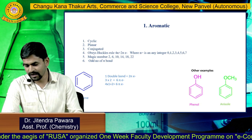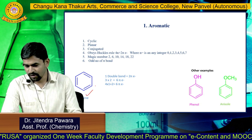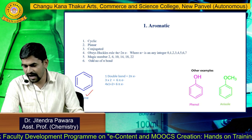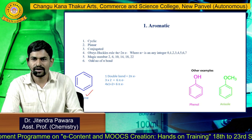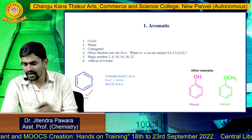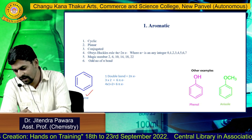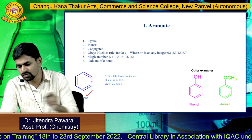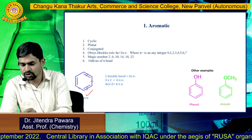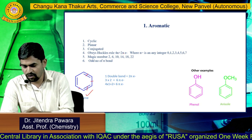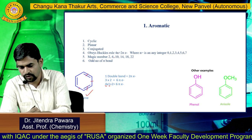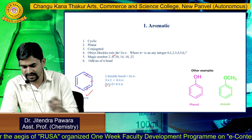Let us take the example of an aromatic compound. Benzene is an aromatic compound because it is cyclic, it is planar — all the carbons of benzene are sp2 hybridized, and sp2 hybridized carbons are planar in nature. So benzene is cyclic, planar, and conjugated. Conjugated means it should have alternating double bonds and single bonds. Benzene has double bond, single bond, double bond, single bond — this is called conjugation. And it obeys Huckel's rule: for n equal to one, four into one plus two gives a total of six pi electrons, so it passes the magic number six. That's why benzene is aromatic.